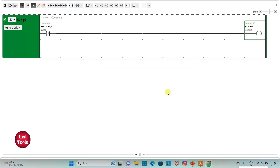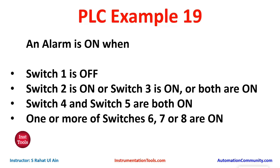So when switch one is off, alarm will be on. Then switch two is on or switch three is on or both are on, so we will use normally open contacts for switch two and switch three and connect them in parallel.